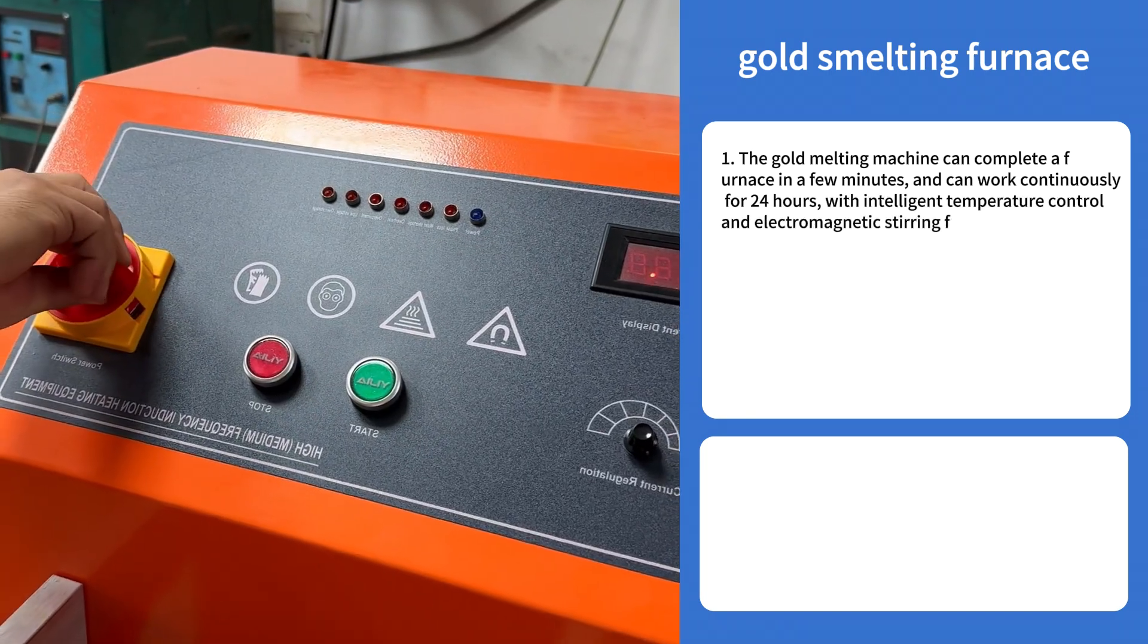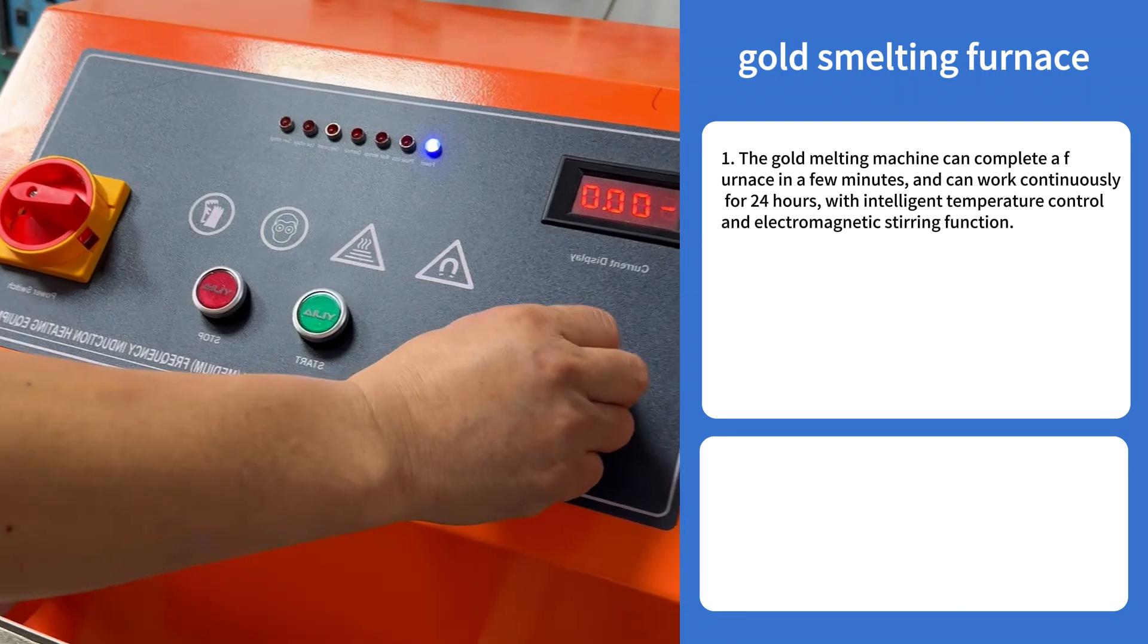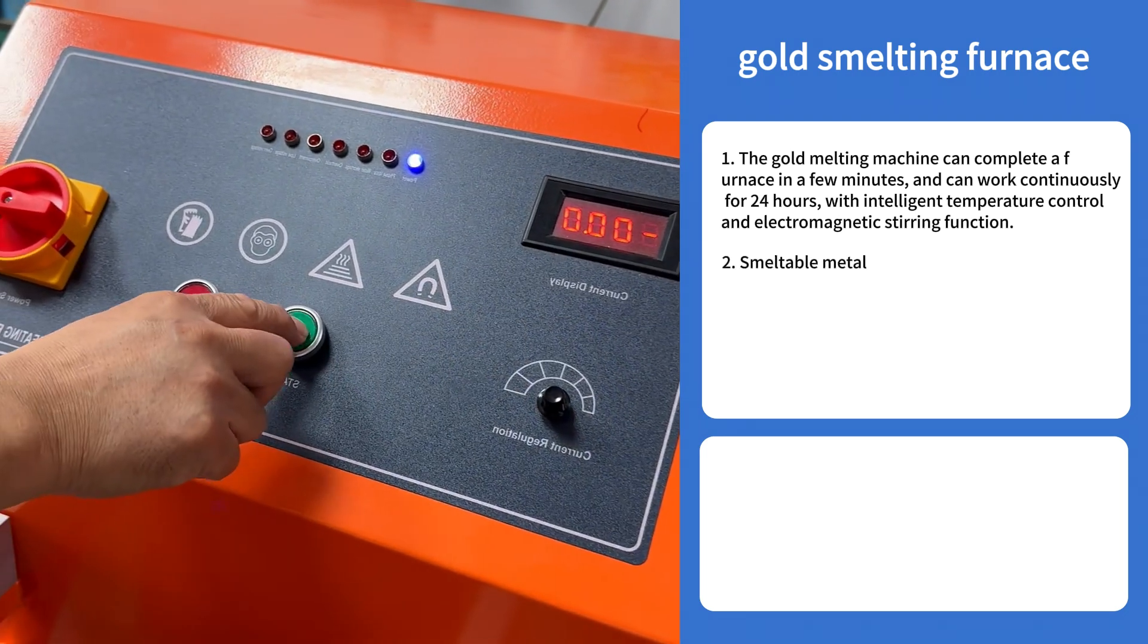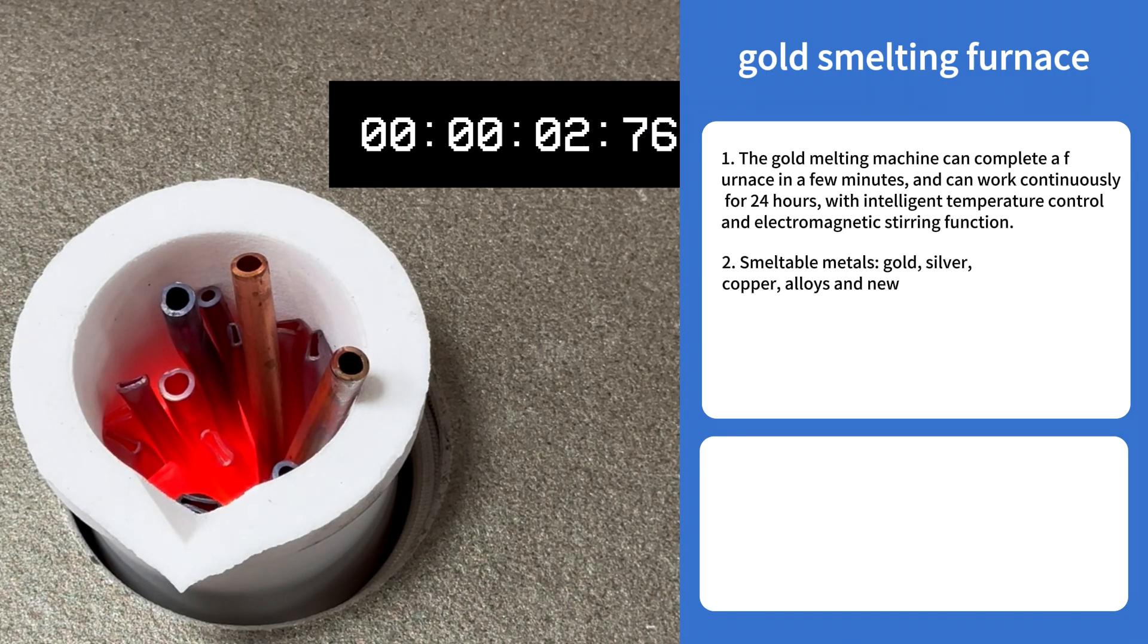With intelligent temperature control and electromagnetic stirring function, smeltable metals include gold, silver, copper, alloys and new materials.